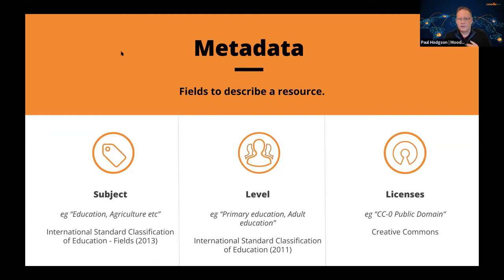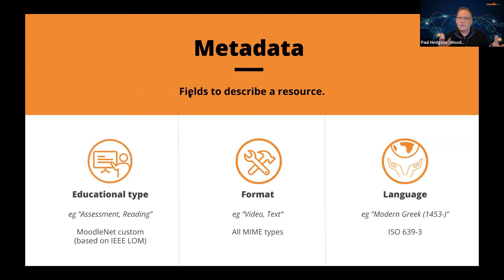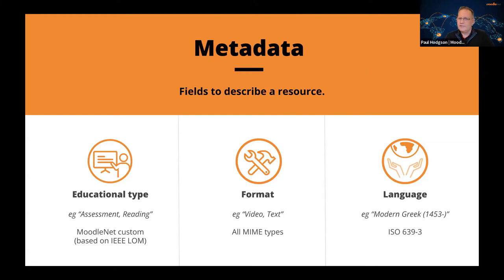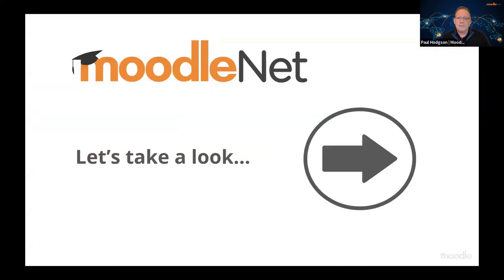You can also specify educational types — is it an assessment, a presentation, a website, a reading, a concept map? There are many options based on the IEEE learning object model. And what format is it in — video, text, PDF? That covers any MIME type you can think of. You can even put in Moodle backup files to share a whole course. And finally, language — using ISO 639, with lots of languages available on every resource. Let's take a look at the live site, which is available right now at Moodle.net.